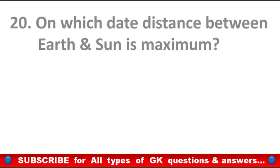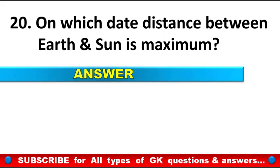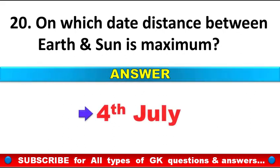On which date is the distance between the Earth and the Sun at its maximum? Answer: On 4th July.